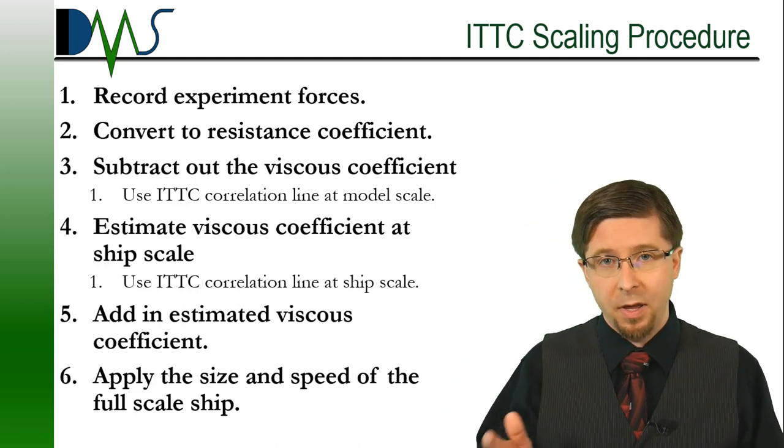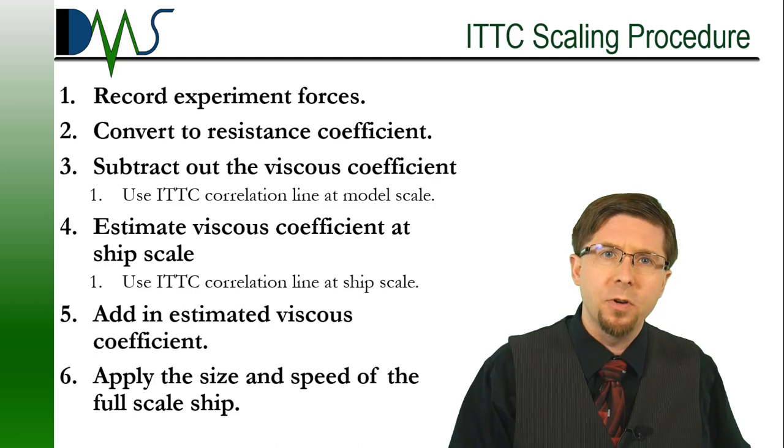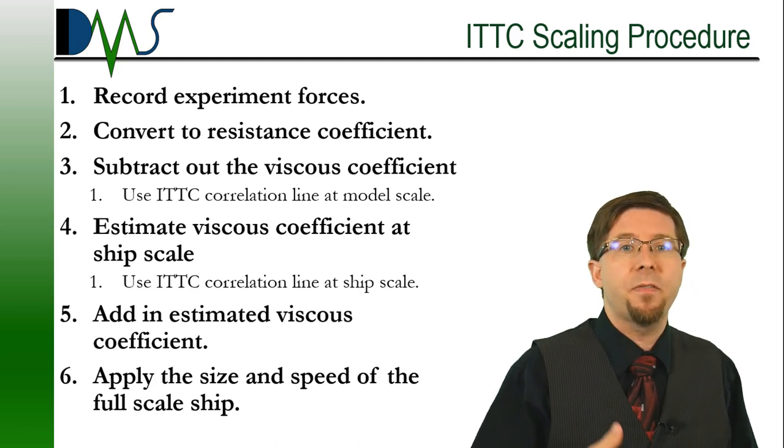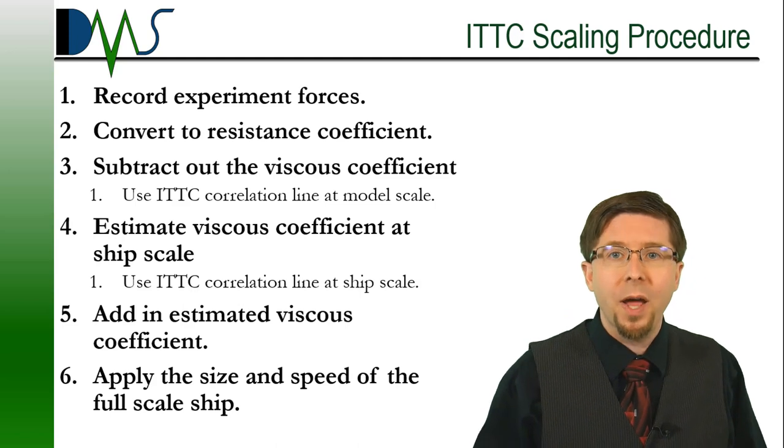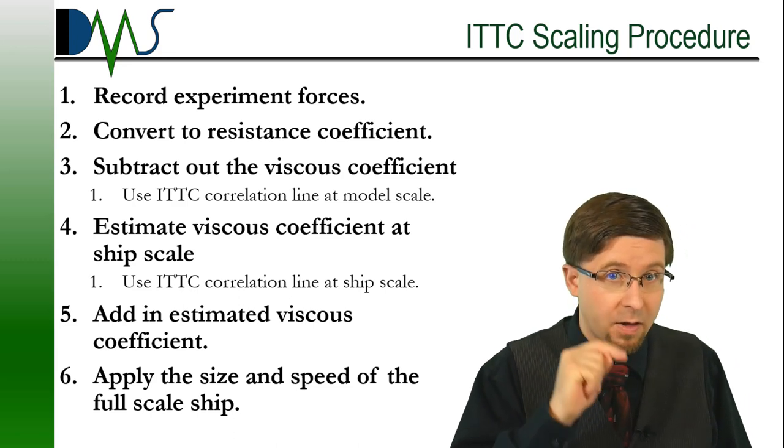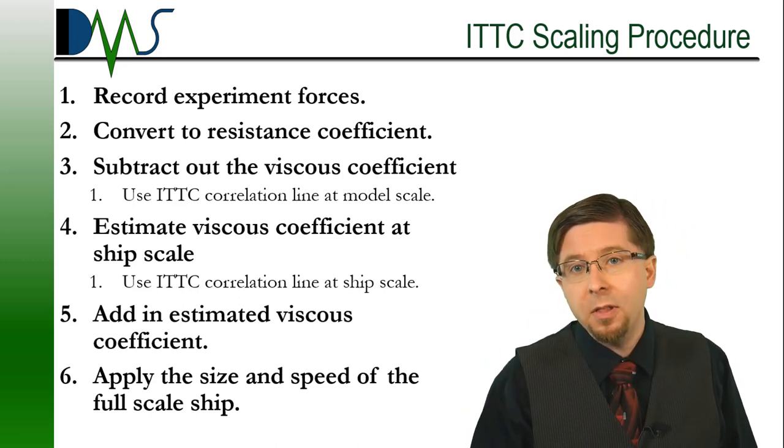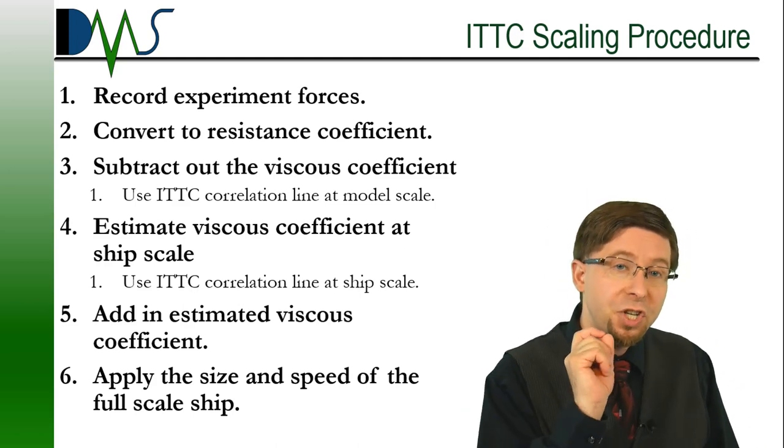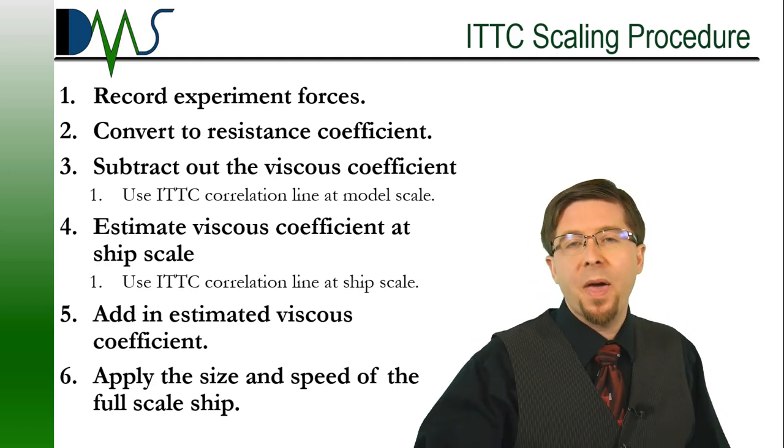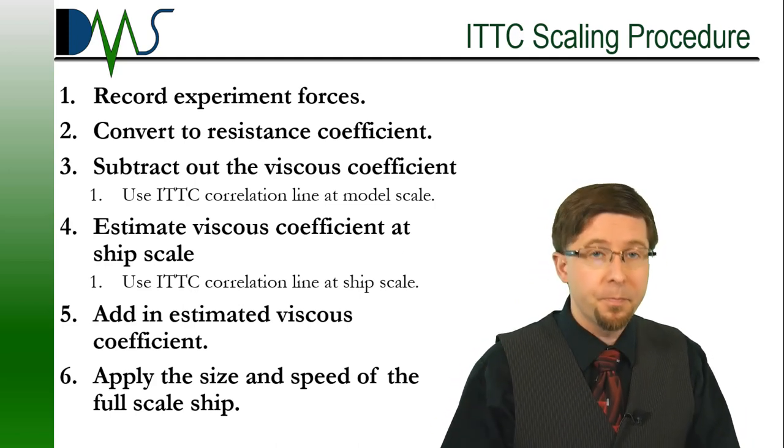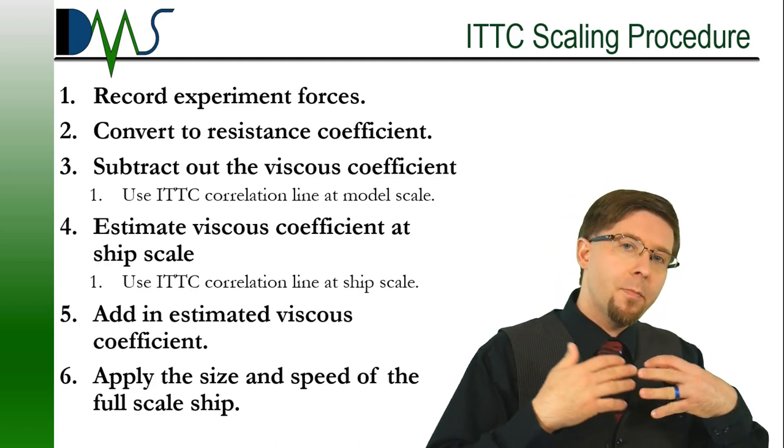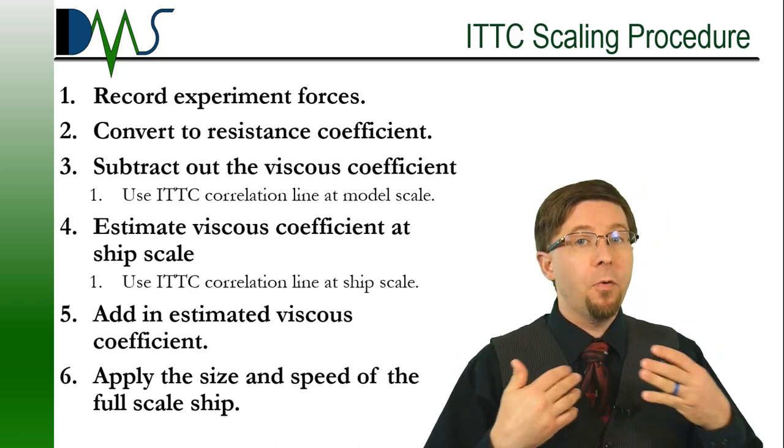Now, the scaling procedure goes roughly like this. Step 1, record your experimental forces from your model scale. Step 2, convert your model scale forces into resistance coefficients by factoring out the model size and speed. Step 3, subtract the viscous coefficient using the ITTC correlation line at model scale. Step 4, recalculate the ITTC correlation line at ship scale to estimate your viscous coefficient at ship scale. Step 5, add back in that estimated viscous coefficient at your ship scale. And step 6, apply the size and speed of your full-scale ship to convert back into full-scale results for resistance and power for your full-scale ship.